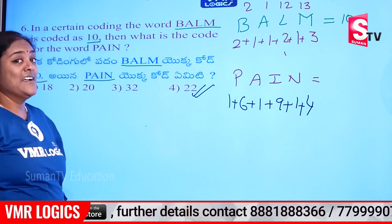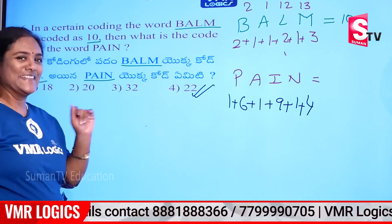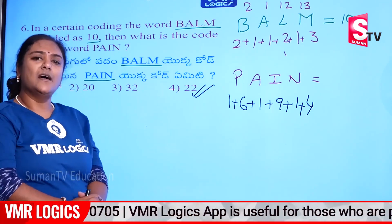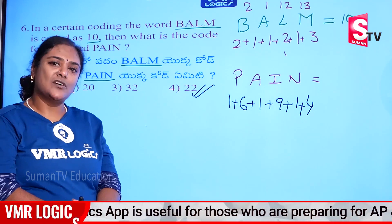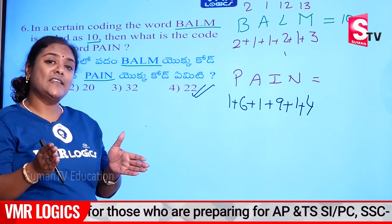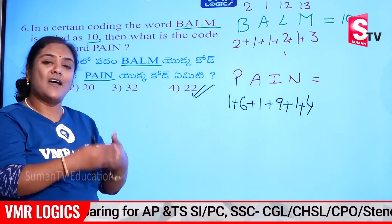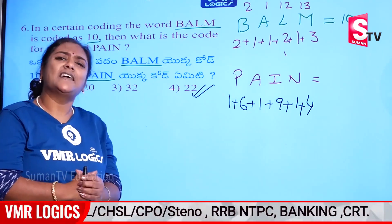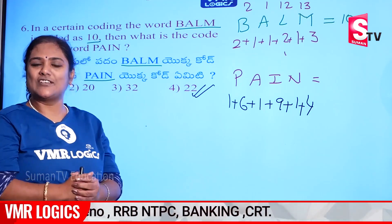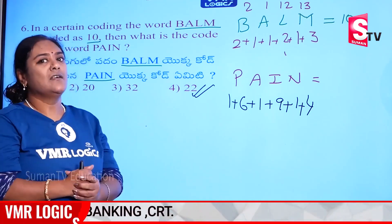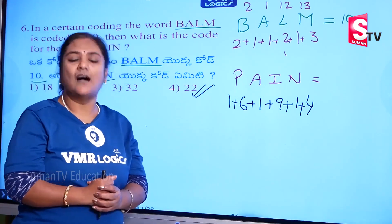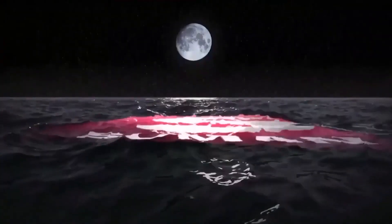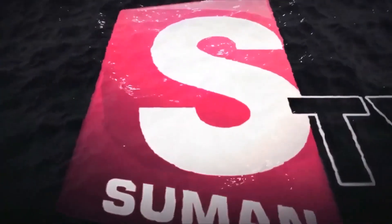Well friends, let's use these logics — number analogy, place values, and single digit logic. We use these logics together to solve number coding problems. Join VMR Logics — every model will be discussed in detail and your success is guaranteed. Thank you.